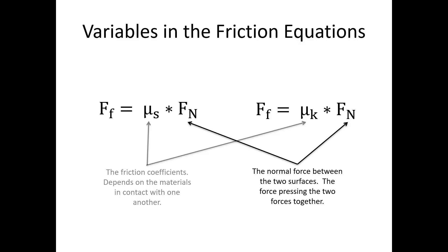We can get around this in some cases. A Formula One race car has lots of aerodynamic elements — spoilers and fins — that press down on the car, creating a greater normal force than just the weight alone. If we increase the normal force without increasing the mass, we can stop the car faster and corner more quickly. Combined with very sticky high-coefficient tires, artificially inflating the normal force maximizes the friction force available to accelerate, turn, and brake.